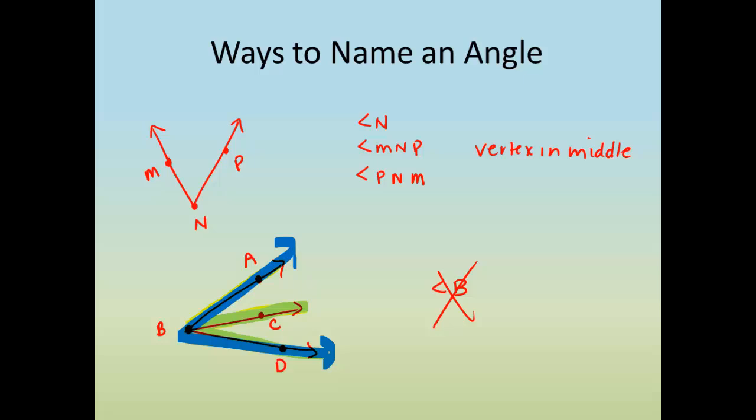Which leads us to looking at different ways to name it. So let's just talk about the very large angle that we have, which would be angle ABD, or we could write that as angle DBA. So if we went A from the top, B the vertex, and D on the bottom, or backwards, D on the bottom, B is the vertex, and A on the top. That would be one angle.